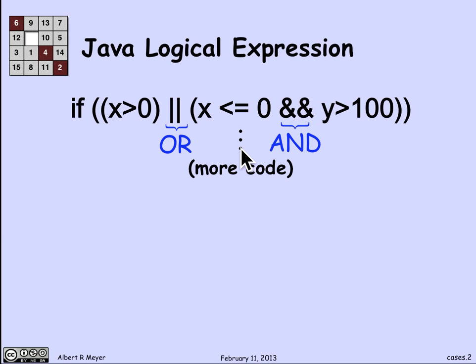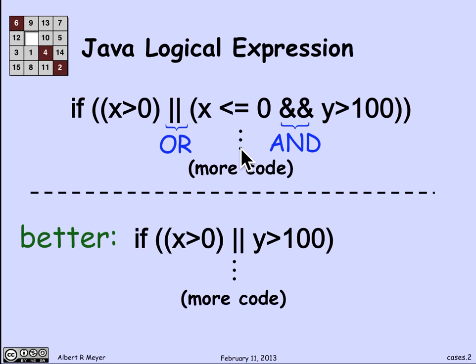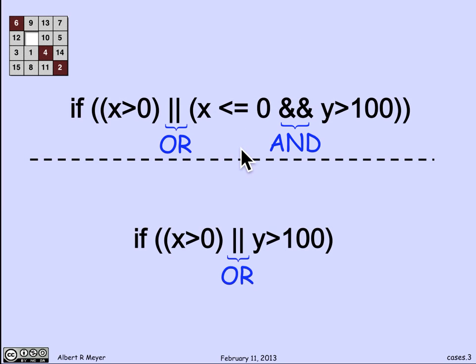We're going to assume here that x and y are variables that are declared to be of type floating point or real number or integers for that matter. Now what I claim is that this code can be improved if it's rewritten in the following way. Namely, if x is greater than 0 or y is greater than 100.